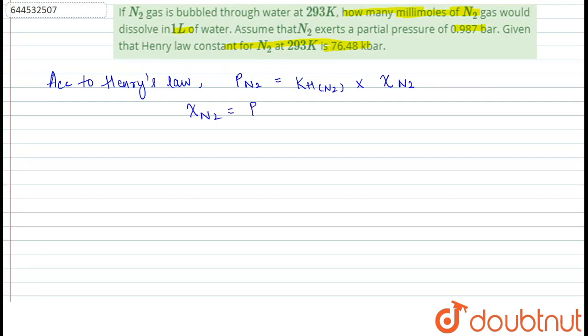To calculate the mole fraction of N2, we will divide its partial pressure by its Henry's law constant. Henry's law constant is equal to 76.48 kilobar. We will convert into bar: 76.48 into 1000 equals 76,480 bar.